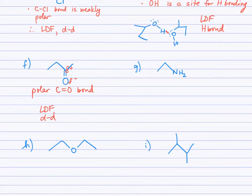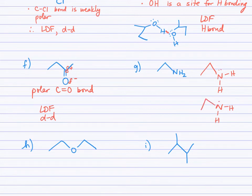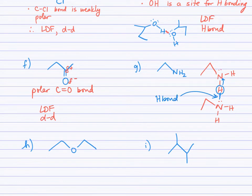In part G, there is an NH₂ group where nitrogen is singly bonded to each hydrogen. An adjacent molecule with the same structure would allow the lone pair on the nitrogen in one molecule to attract the hydrogen directly bonded to nitrogen in the second molecule, forming a hydrogen bond. There is also a second site for hydrogen bonding at the other hydrogen. So this molecule experiences London dispersion forces and hydrogen bonds.